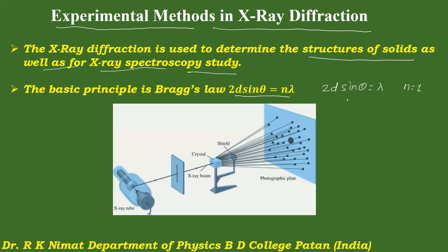Reflection takes place for those values of d, θ, and λ which satisfy this Bragg's condition. So Bragg reflection is observed for those values of d, θ, and λ which satisfy the equation 2d sinθ = nλ, or simply λ for first order reflection.